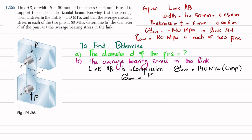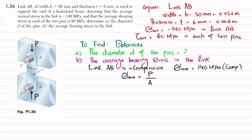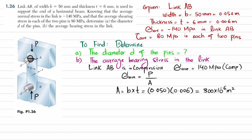We know that normal stress is equal to load per unit area. We have the area of this link. In compression, we neglect the hole in the link because the hole will also compress, so the net area equals width times thickness. Area A equals B multiplied by T, so B is 50 millimeter which is 0.050 meter and thickness is 0.006 meter, giving 300 times 10 to the power minus 6 square meter.